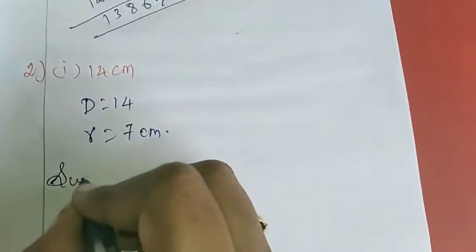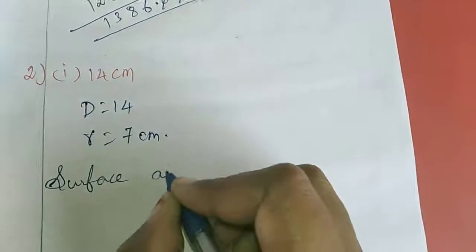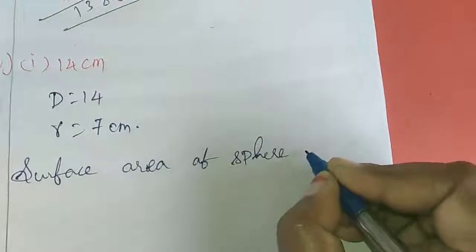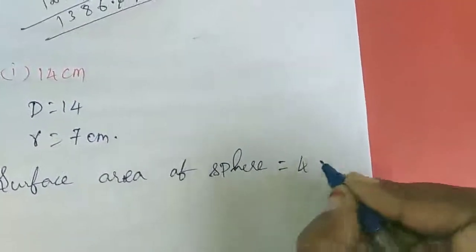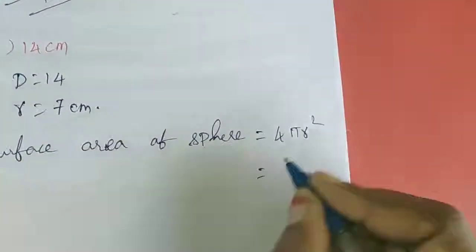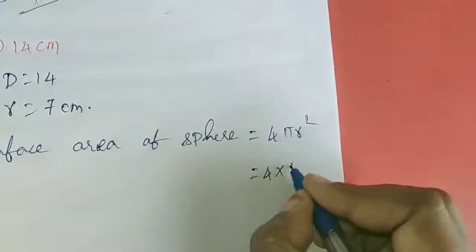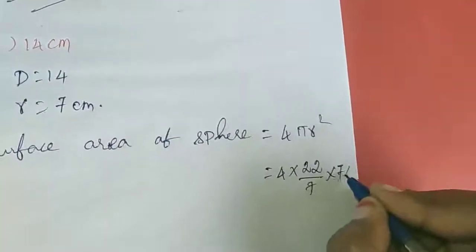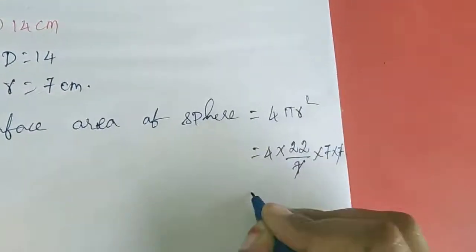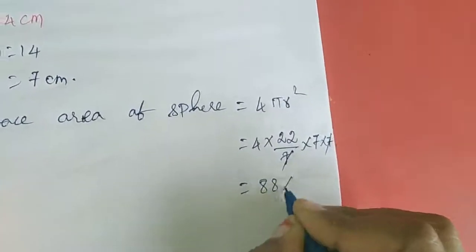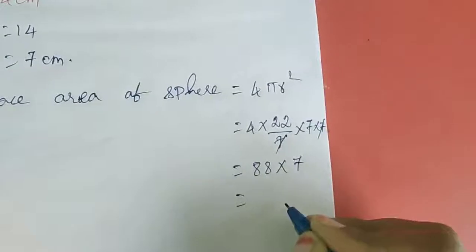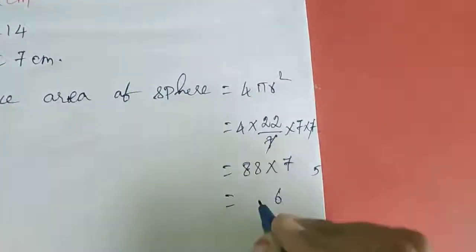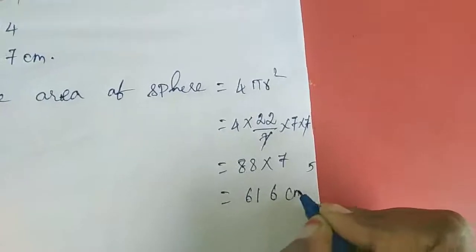Surface area of sphere = 4πr² = 4 × (22/7) × 7 × 7. The 7s cancel: 4 × 22 × 7 = 616 centimeters square.